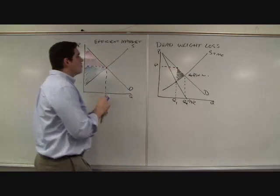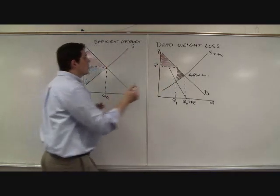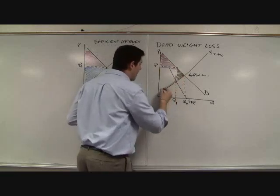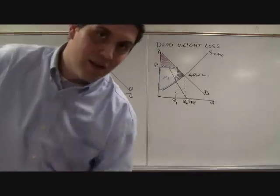Again, you can show consumer surplus is here, right? For the monopoly, producer surplus is right there. For monopoly, producer surplus, consumer surplus. We have inefficiency, deadweight loss. Until next time.